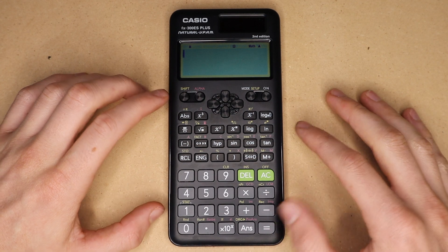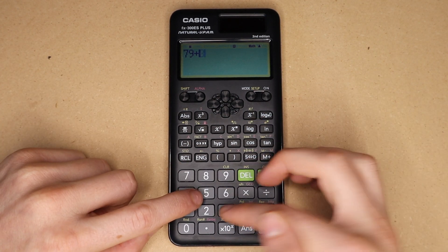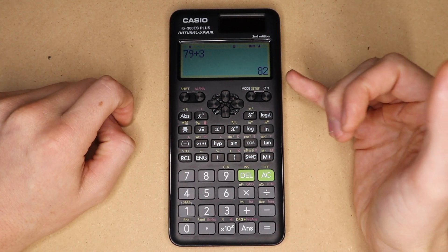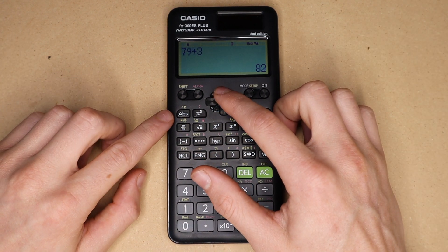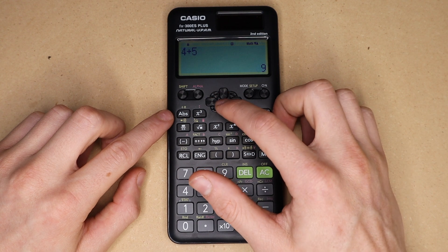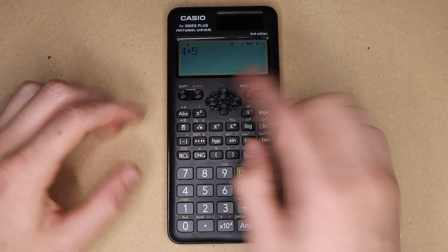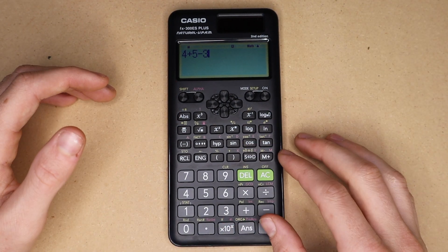This is what the main home calculation screen looks like. You can type any expression in here and you'll get your original expression on the left and then your answer on the right. You can scroll back through to see any of your previous calculations, and if you see one that you want to edit again you can just press this arrow right there and then it'll re-enter it and you can add whatever you want to that expression and then reevaluate.